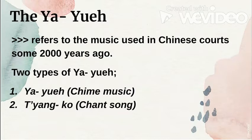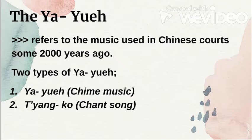Yayue refers to the music used in Chinese courts some 2,000 years ago. It was influenced by Indian, Persian, and other Central Asian traders. There are two types of Yayue: Yayue, which is court music, and Tiangko, which is chant music. They also have chant songs.